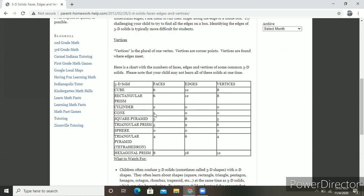Cone has 1 face, which is curved, 1 edge, and 1 vertex. Square pyramid has 5 faces, 8 edges, and 5 vertices. Triangular prism has 5 faces, 9 edges, and 6 vertices. Sphere has 0 faces, 0 edges, and 0 vertices. Triangular pyramid has 4 faces, 6 edges, and 4 vertices. Hexagonal prism has 8 faces, 18 edges, and 12 vertices.